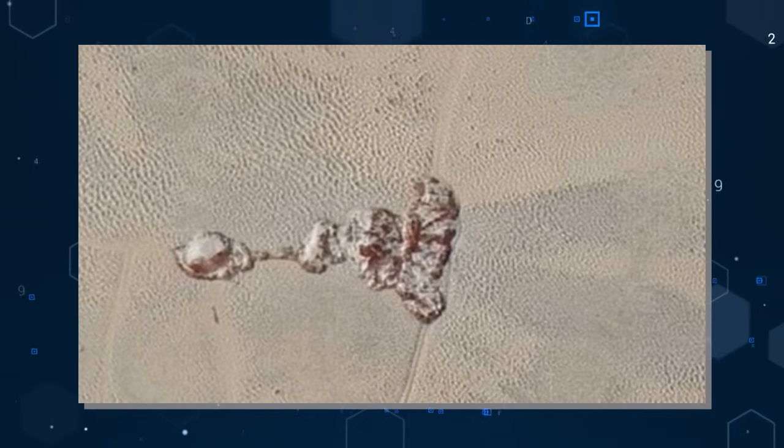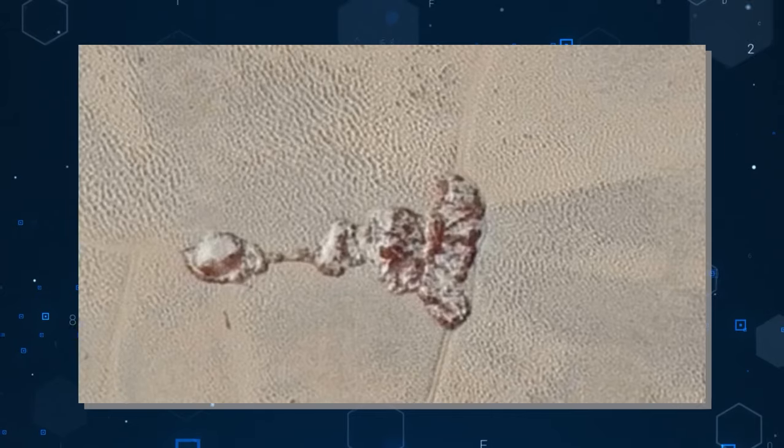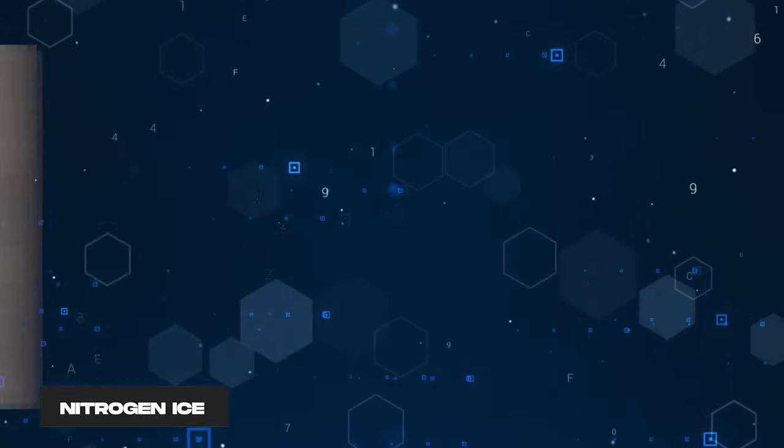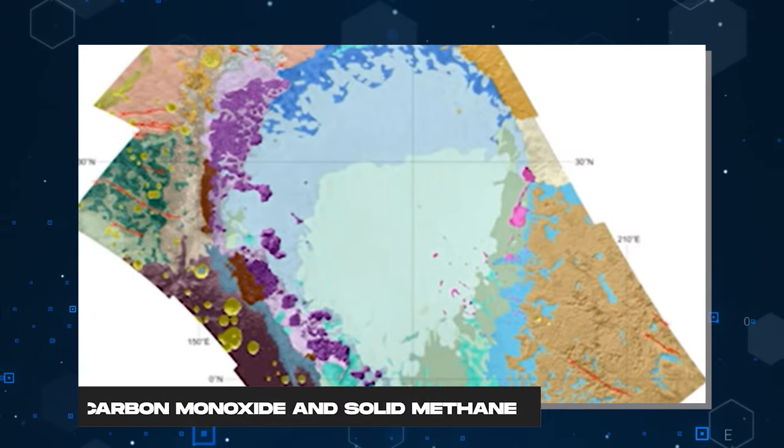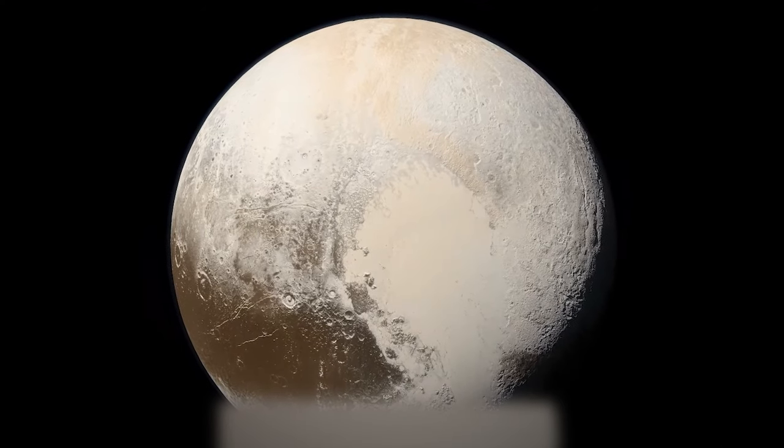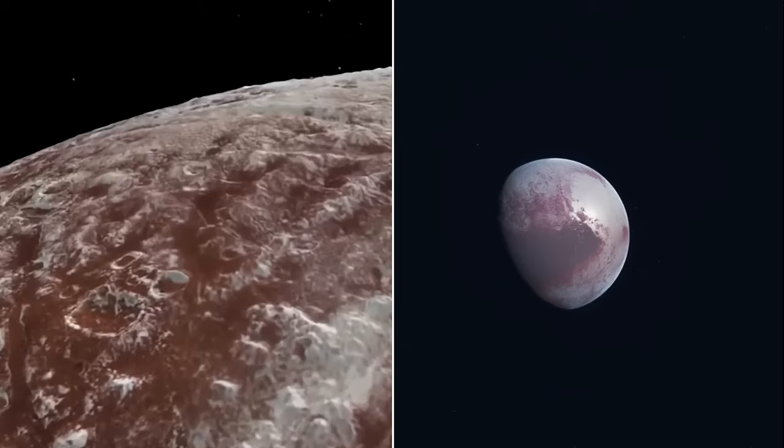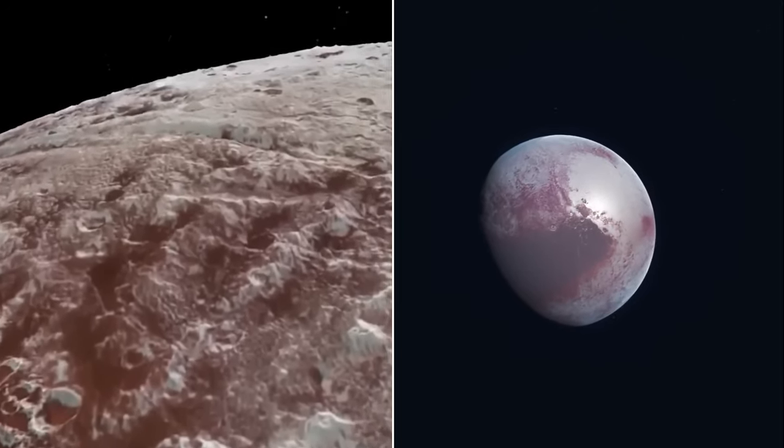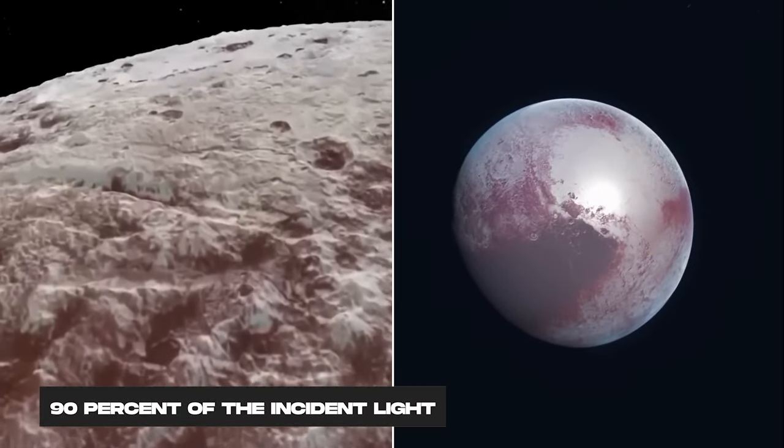Covering the expanses of Tombaugh Regio is a substantial layer of nitrogen ice, intermingled with carbon monoxide and solid methane. These constituents bestow a pale hue to the region, causing certain areas to reflect up to an impressive 90% of the incident light.